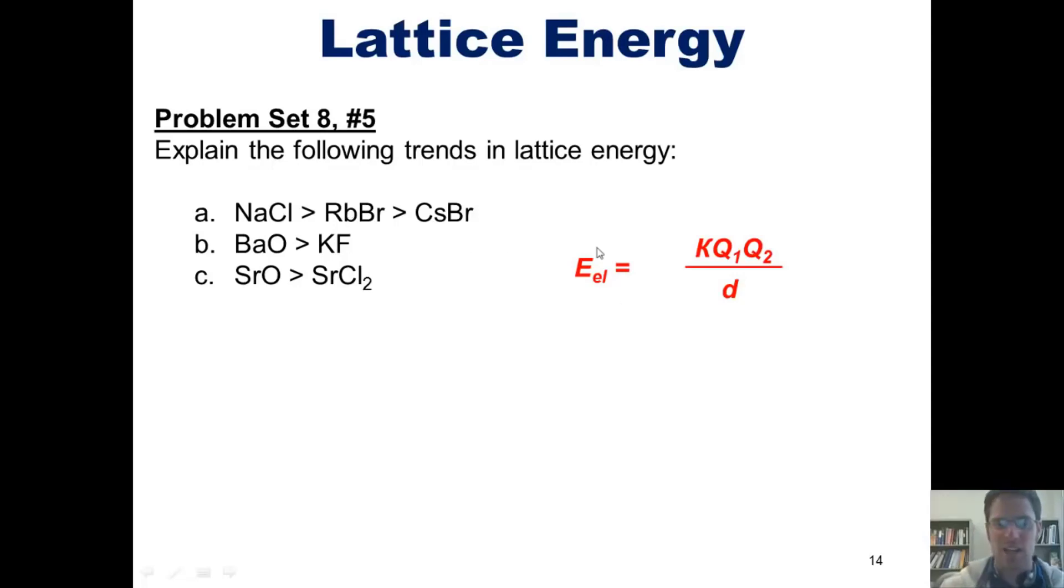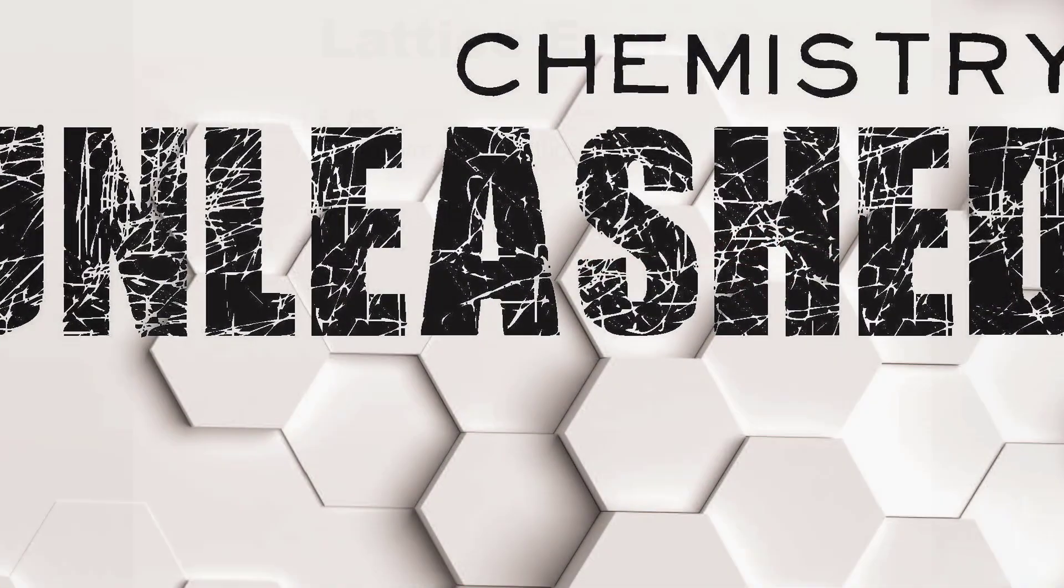the reason we see the lattice energy E sub L decreasing going from left to right here is because the bonding distance in each of these compounds is increasing. I'll leave it up to you to see if you can come up with an explanation for the trends observed in parts B and C. Alright, so that's the end of this video, but don't worry, there's more to come. Please stay tuned and until then, have an enjoyable rest of your day. We'll see you next time.